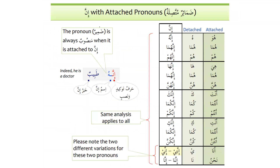Inna can also be used with attached pronouns. We have learned detached pronouns: hua, huma, hum, hiya, huma, hunna, anta, antuma, antum, anti, antuma, antunna, ana, wa nahnu. The attached pronouns can all be used with inna: hu becomes innahu, huma becomes innahoma, hum becomes innahum, and so on.